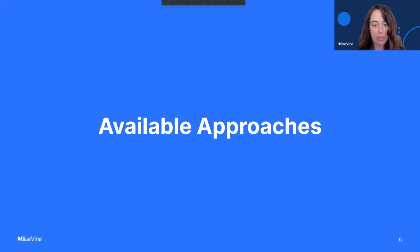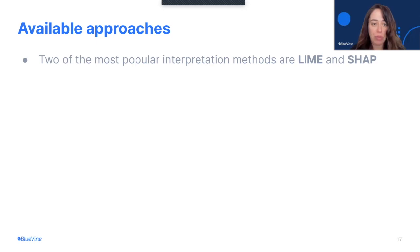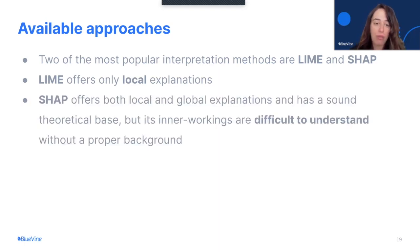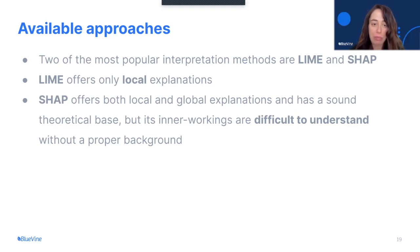Some available approaches for interpretation: two of the most popular interpretation methods are LIME and SHAP. LIME offers only local explanations, while SHAP offers both local and global explanations and also has a sound theoretical base. But its inner workings are difficult to understand without a proper background.